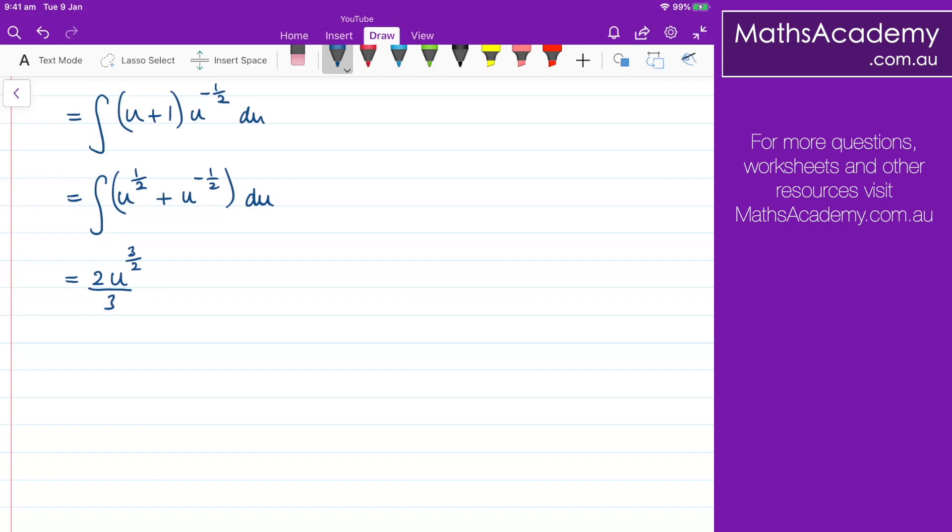When I integrate u to the negative 1 half, I would get u to the power of 1 half. And I'm dividing by 1 half, which is the same as multiplying by 2. And then I have the constant of integration.